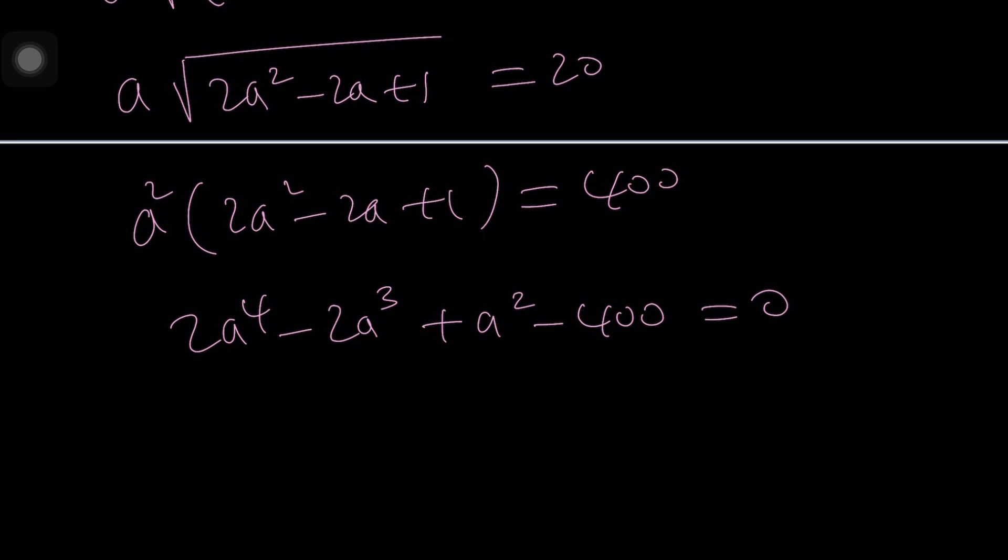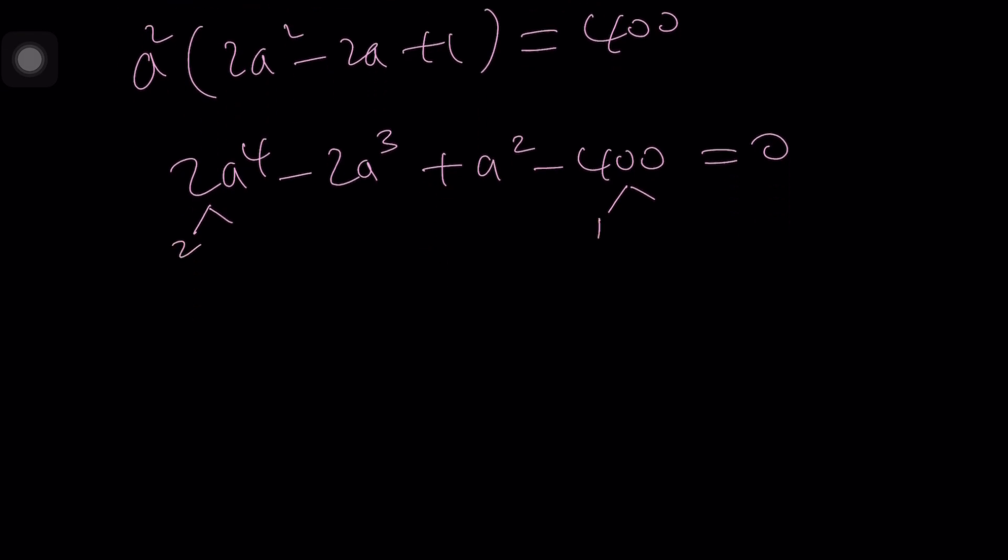So how do we do that? We could use the rational root theorem looking at the factors of this number divided by the factors of this number and all possible combinations as a quotient. For example if I take one from here and two from here that's one half. If I take the two and the two that's one. If I take a four and a two that's a two and so forth. You'll get many other candidates.